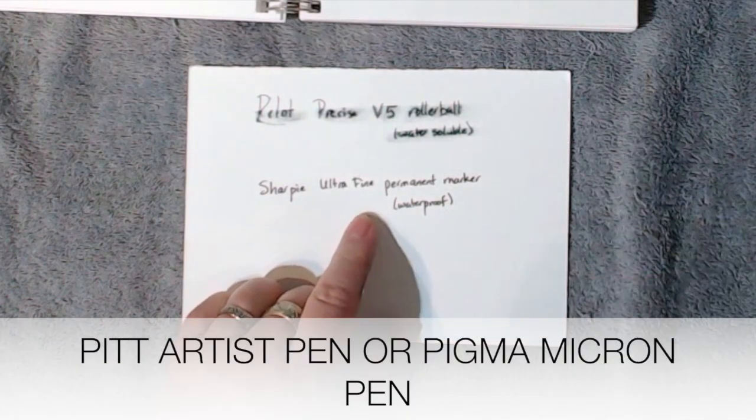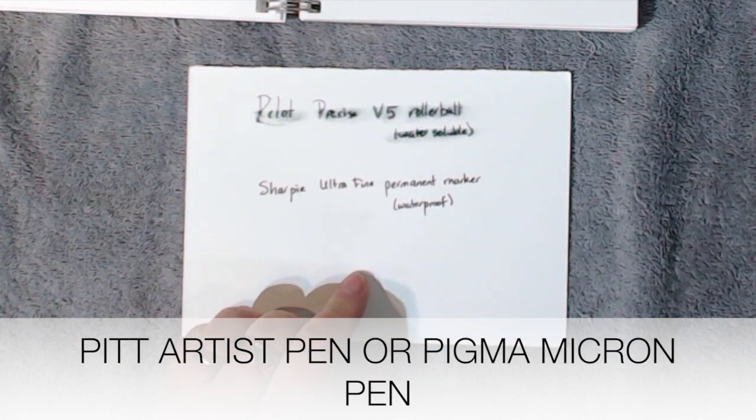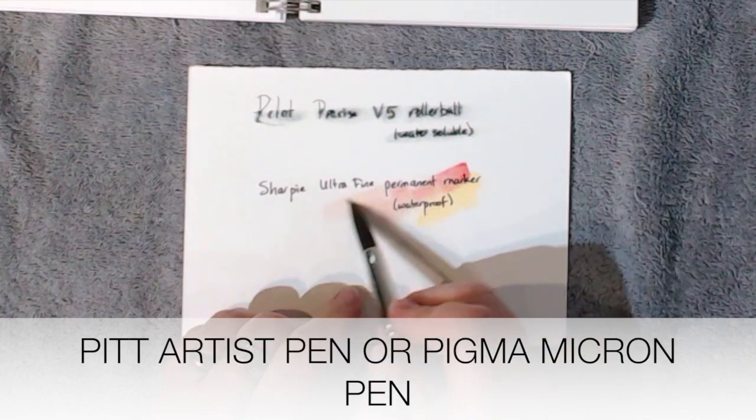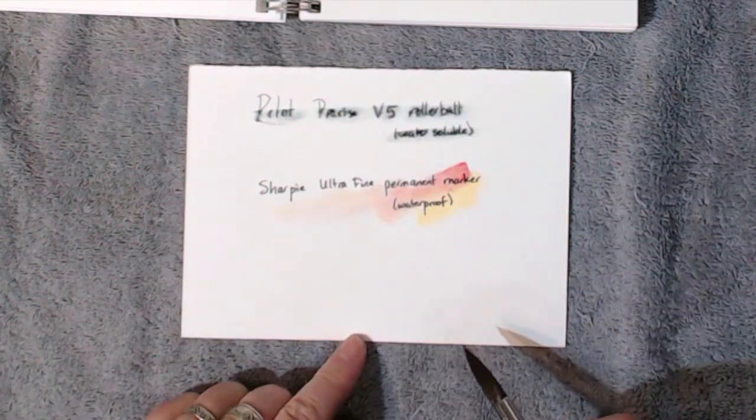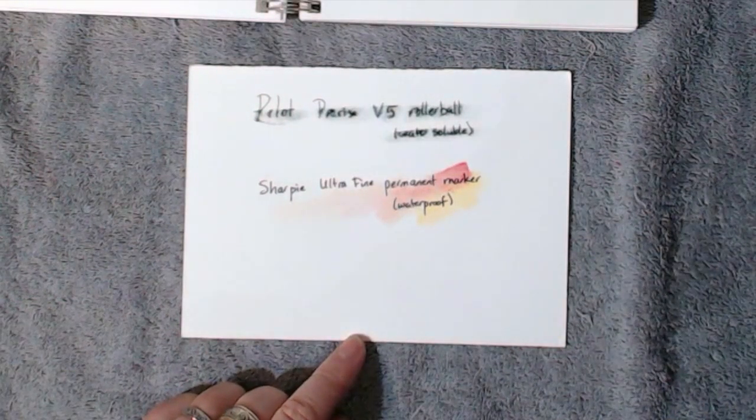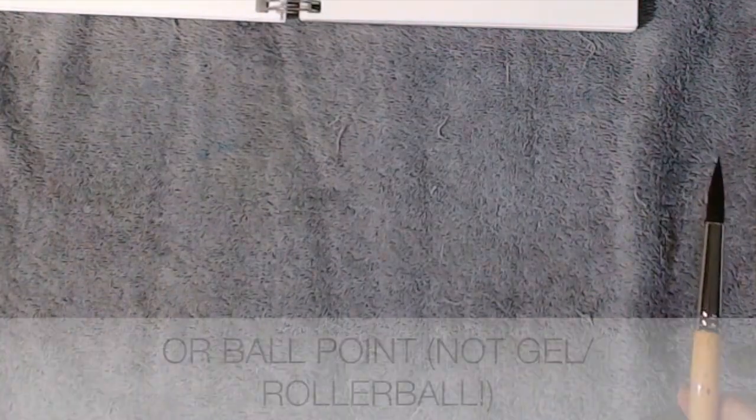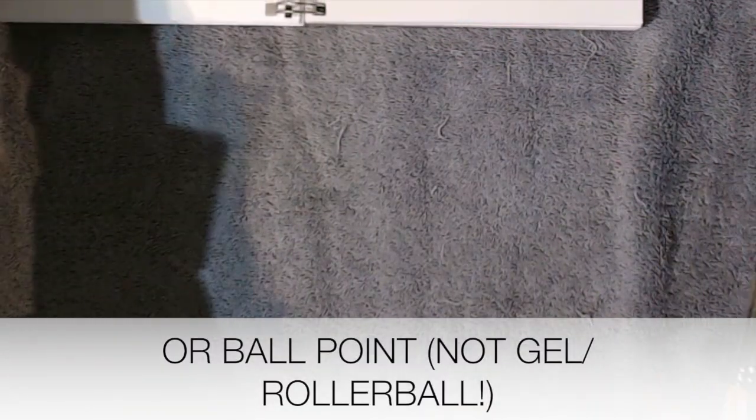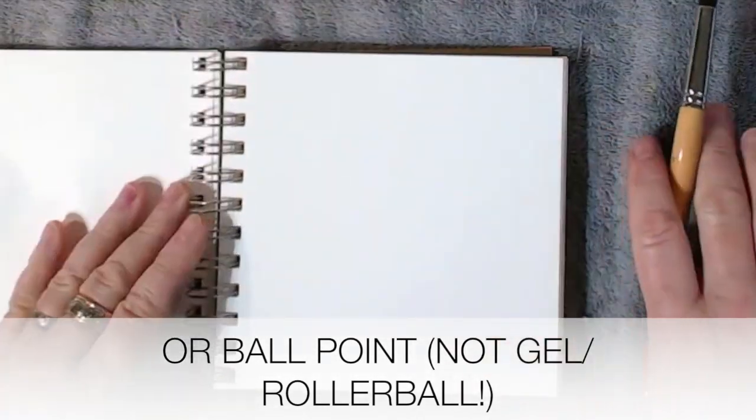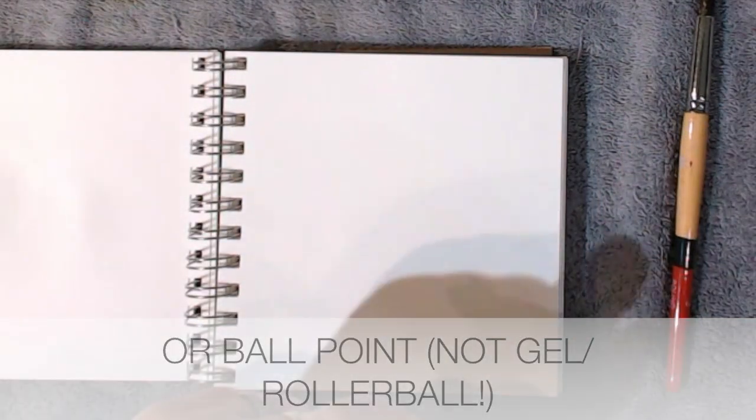There are also many artist pens such as the Pitt artist pen or the Pigma Micron pen that don't move when you get them wet, so one of those might work. You see as I put color over this, the line is undisturbed and that's what we want. In a pinch you can use a ballpoint pen that, because it's oil-based or wax-based, will not move when you get it wet.